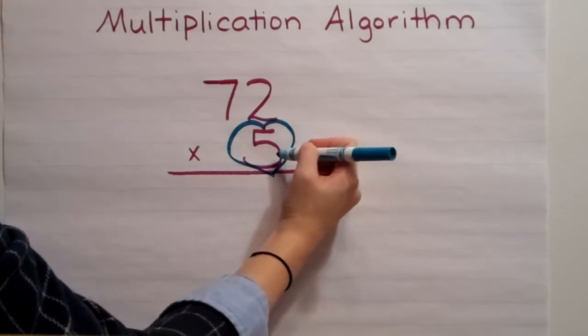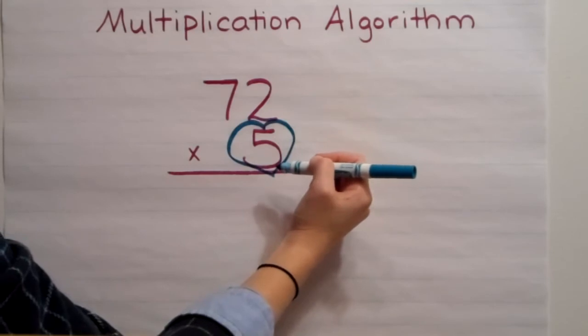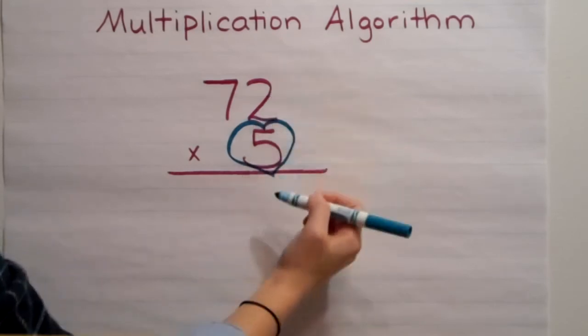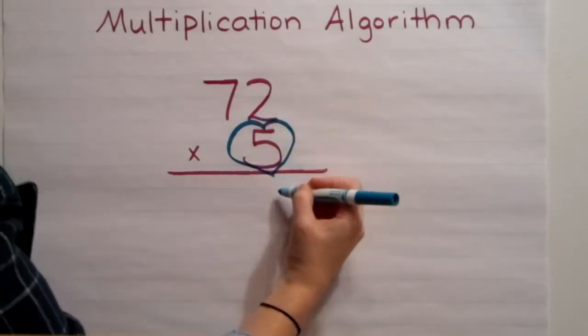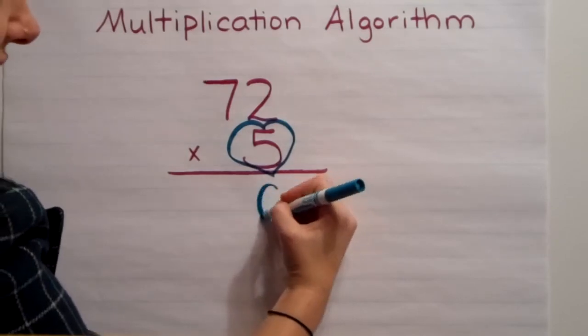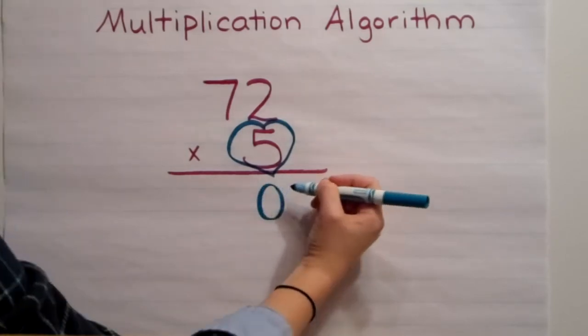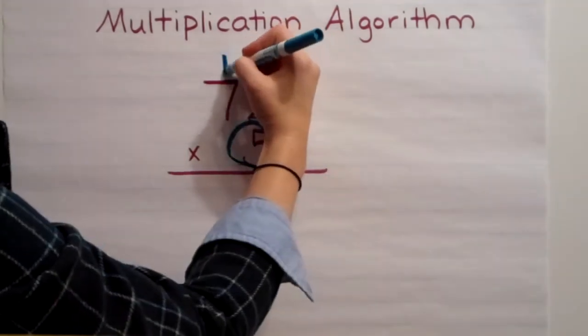So I'm going to start with my 5, and I'm going to multiply it by the digit in the ones place. 5 times 2 is 10. I'm going to bring the 0 straight down, and I'm going to regroup my 1.